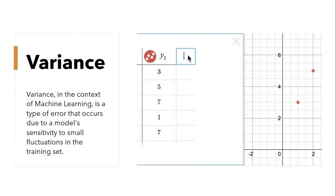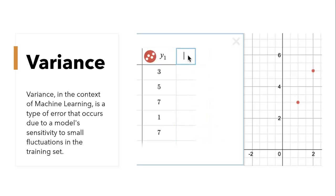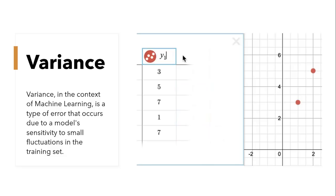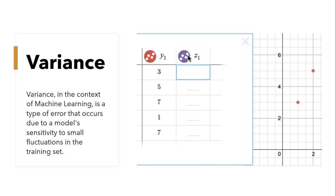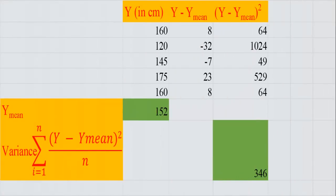Before understanding how variance affects a machine learning model, let's quickly understand the statistical meaning of variance. Variance is the variability of model prediction for a given data point — a value which tells us the spread of our data. Here we have data of students in a class with heights given in cm as shown on the screen. For finding variance we will see how much our data is spread from the middle, or you can say from the mean value. Let's calculate the mean first by adding all 5 values and dividing by 5.